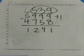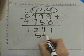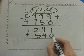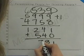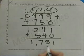We'll add these two together, 539 plus 1 is 540, and add those to our answer to get the final answer, which is 1,781.